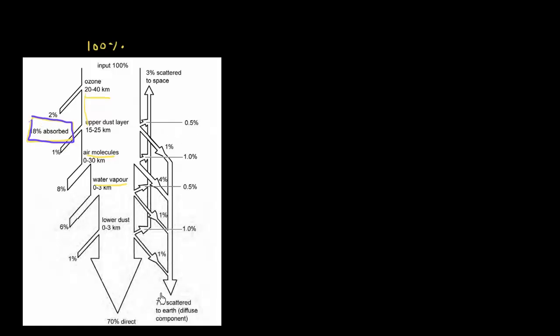And then 7% of it, or approximately between 7 to 10% of it, gets scattered and it forms this diffusive component. And then 70% of that is what comes directly and hits your panel directly.